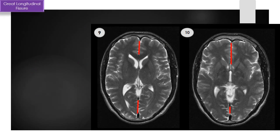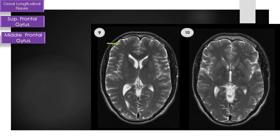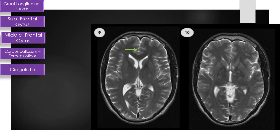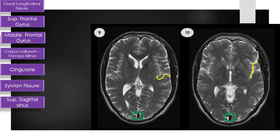The structures include the great longitudinal fissure, superior frontal gyrus, middle frontal gyrus, corpus callosum forceps minor, cingulate gyrus, and the sylvian fissure indicated by yellow lines.